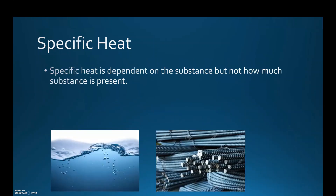Now, as we talk about specific heat, specific heat is dependent on the substance but not how much substance is present. It's not like heat capacity where it was dependent on the amount of substance present. No matter how much substance you have, the specific heat will always stay the same. So if you have 10 grams of water versus 100 grams of water, the specific heat is always going to be the same value. Water has a specific heat of 4.18 joules per gram per degree Celsius for liquid water. This is a constant you want to remember.